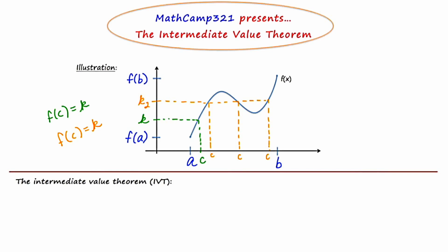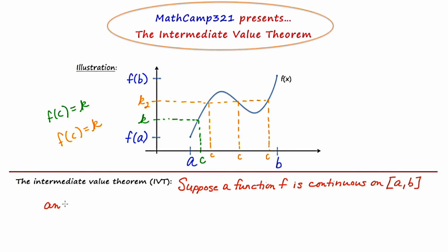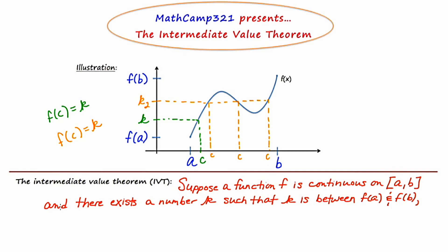Now let's write the theorem out in words. The Intermediate Value Theorem, or the IVT: Suppose a function f is continuous on a closed interval a,b, and there exists a number k such that k is between f of a and f of b, then there is at least one number c on the closed interval from a to b for which f of c equals k.